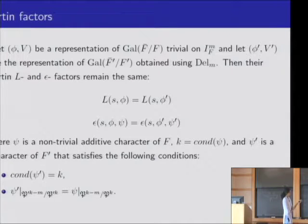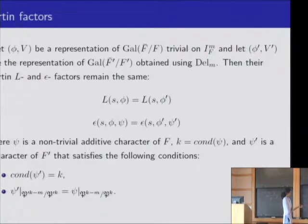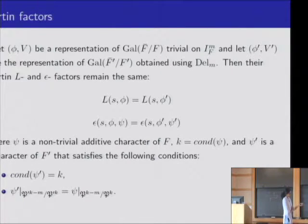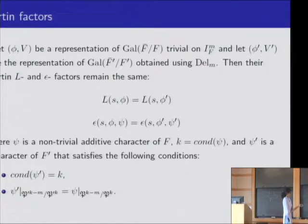If Z is a non-trivial additive character of F with conductor K, then Z prime is a character of F prime satisfying two conditions: the conductor is also K, and they both agree on the quotient P^{K-M} mod P^K, which is isomorphic to O mod P^M. For close fields, this is what you can expect. We set Z and Z prime to be compatible if they satisfy these two conditions.